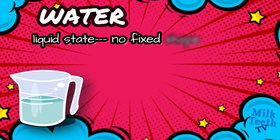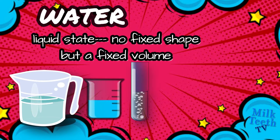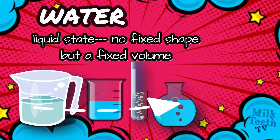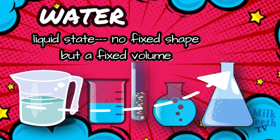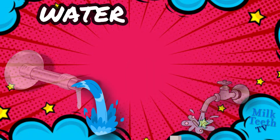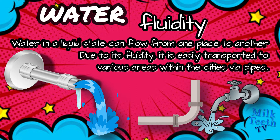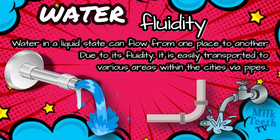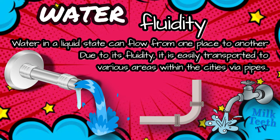In its liquid state, water may not have a fixed shape, but it does have a fixed volume like other liquids. This means that even if we change the container of liquid water, the volume of the water remains the same. Water in a liquid state can flow from one place to another, and due to its fluidity, it is easily transported to various areas within cities via pipes.